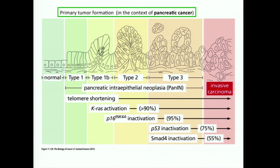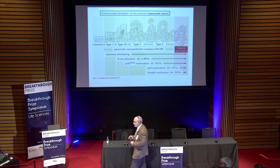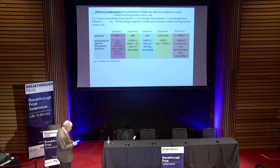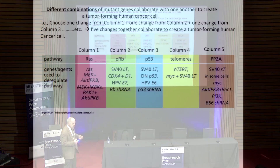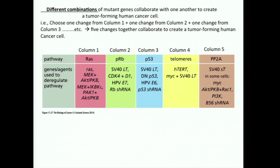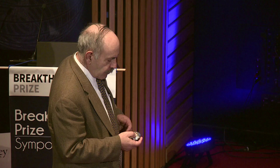The same can be said, for example, in the pancreas, where once again, as one sees the increasing degree of histopathological abnormality, one sees the accumulation of genetic mutations, which are not simply accompanying this change, but actually driving the change. The model that has developed is that there's a whole series of pathways in a human cell that need to be deregulated, and if one perturbs each of these distinct signaling pathways together, that will create a fully transformed cell, indicating that one needs multiple successive changes at the level of genetics in order to create a fully malignant neoplastic cell.